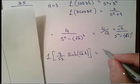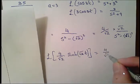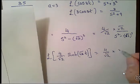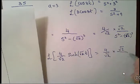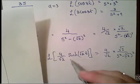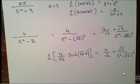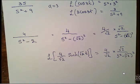So the inverse Laplace transform of 4 over s squared minus 2 is (4 over sqrt(2)) times sinh(sqrt(2) · t). That's the final answer. That's enough for now — these are some harder examples, but it's a good exercise to start getting used to the Laplace transform tables.